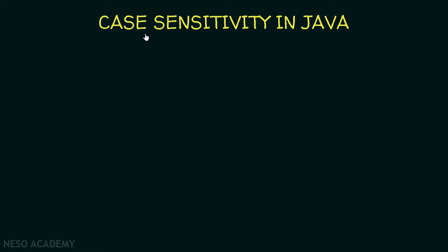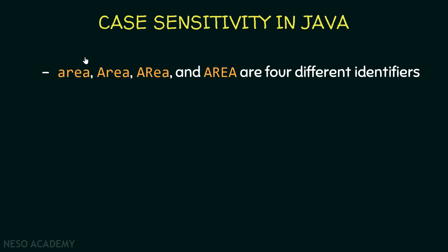Now let's talk about case sensitivity in Java. Have a look at these four identifiers — they look the same, but the only difference is the use of lowercase and uppercase characters. Case sensitivity is important: a small letter is different from a capital letter. So these four identifiers are different — we can have a variable called 'area' in all lowercase and another variable called 'Area' with a capital A, because these are different identifiers.